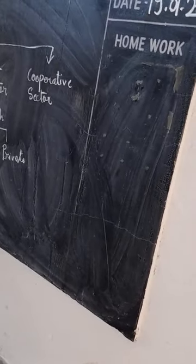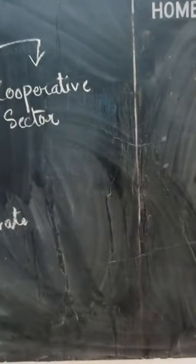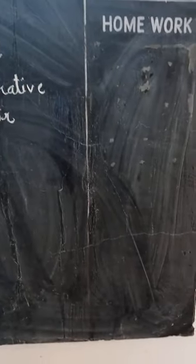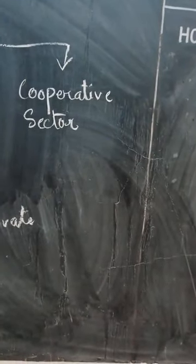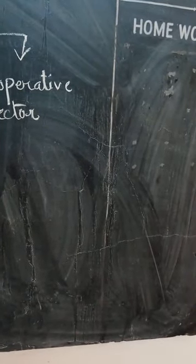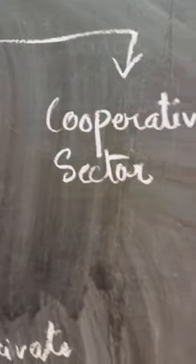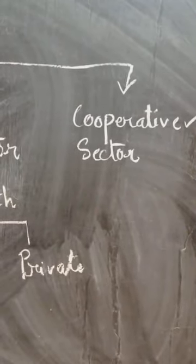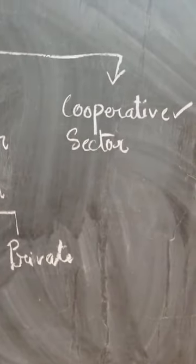Now, continuing with the same topic, we have the cooperative sector industries. What is the term of ownership in the cooperative sector? These industries are owned and operated by the suppliers or the producers of raw materials, or workers, or both. In this sector, the industries are owned by the cooperation of the employees as well as the owners.